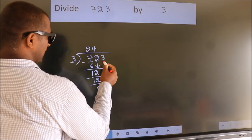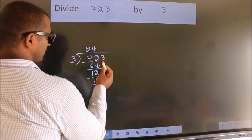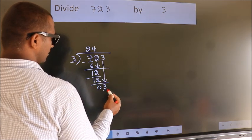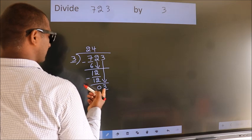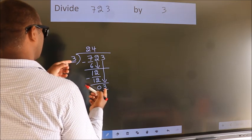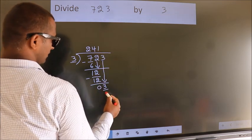After this, bring down the beside number. So, 3 down. So, 3. When do we get 3? In 3 table. 3 ones, 3.